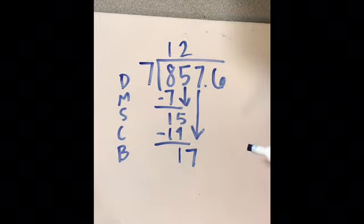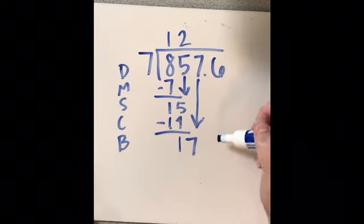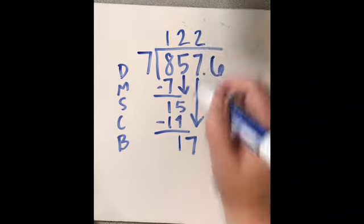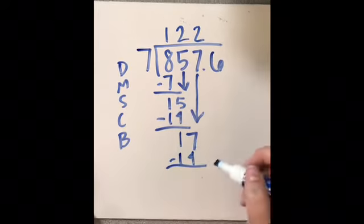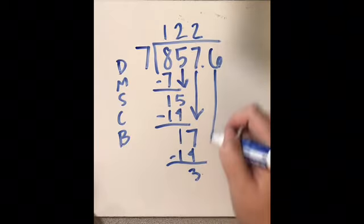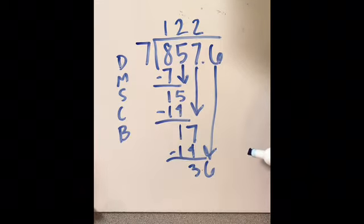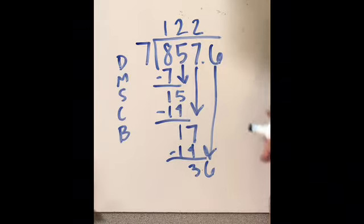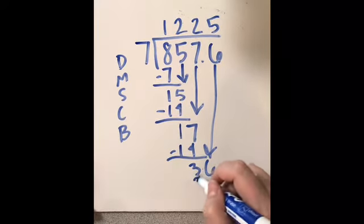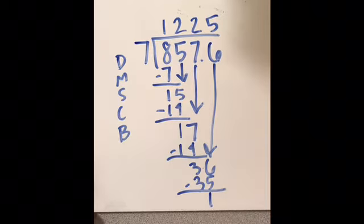How many times does 7 go into 17? Well, we just figured out 7 times 2 is 14. That's as close as we can get. 14. I would just count up here. 15, 16, 17 would be 3. Now 7 into 36. 7 times 5 is 35. As close as we can get. I'm running out of room. So we get 1 left over.